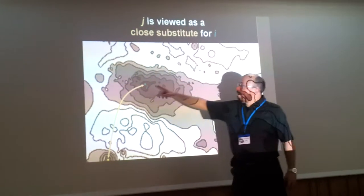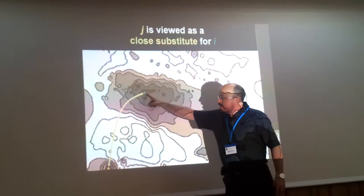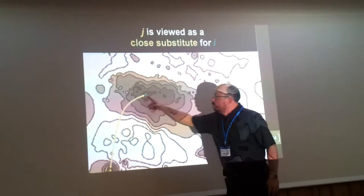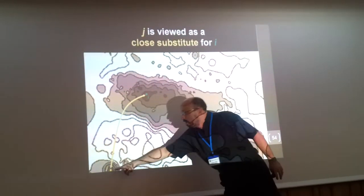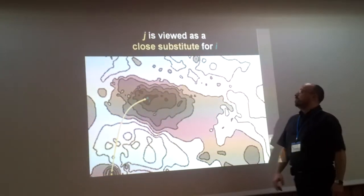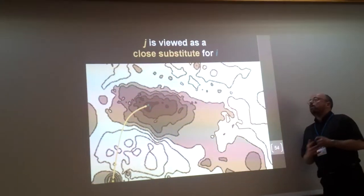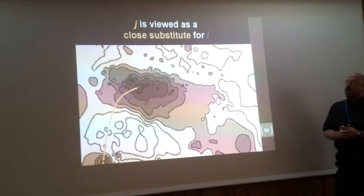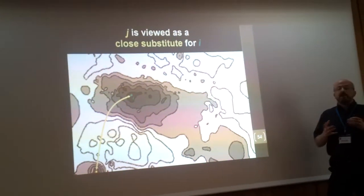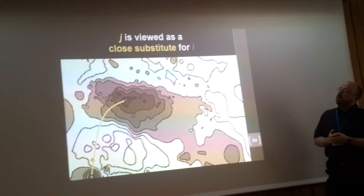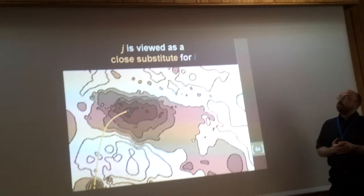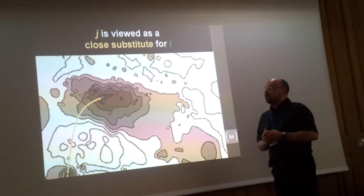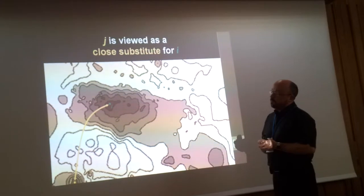What was interesting is these wormholes. You would get a neighborhood across the other side of a city, quite far away, where apparently there seems to be a high degree of substitutability — using, albeit, an imperfect measure of substitutability.